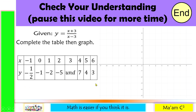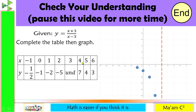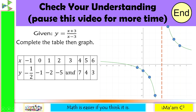Now that we have completed the table, let us graph. For x = negative 1, y = negative 1/2. For x = 0, y = negative 1. For x = 1, y = negative 2. For x = 2, y = negative 5. For x = 3, the value is undefined — allow me to draw a vertical dashed line. For x = 4, y = 7. For x = 5, y = 4. For x = 6, y = 3. Now let us connect the points — this graph approaches the asymptote on both sides.